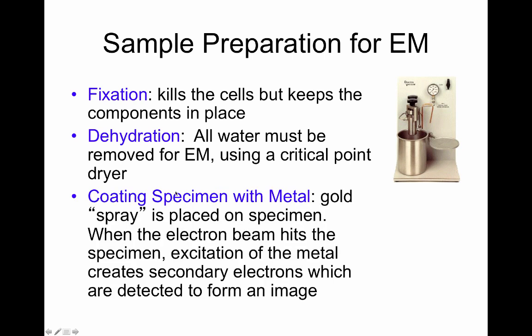Last, you have to perform coating of the specimen with metal, particularly a gold spray. The gold spray is placed on the specimen, and that is going to allow an enhancement of electron generation when the electron beam hits the gold atoms. When the electron beam hits the specimen, the excitation of those gold atoms is going to create secondary electrons which are also going to be detected to form the image.